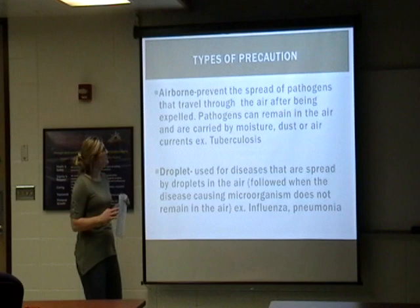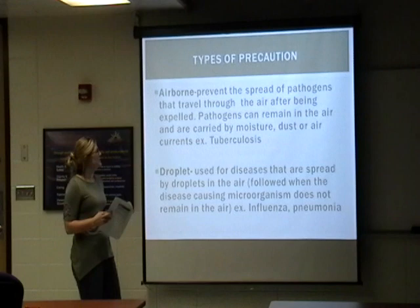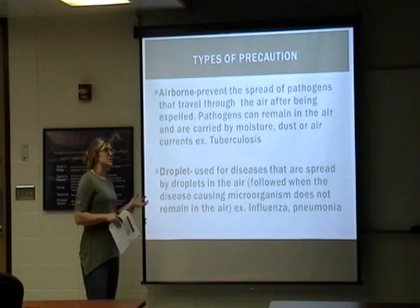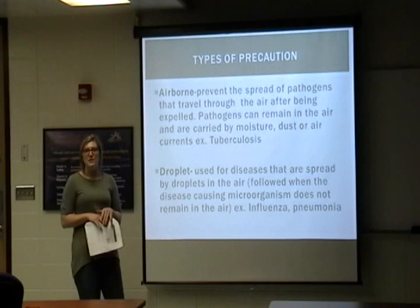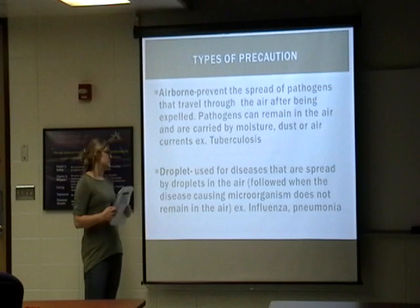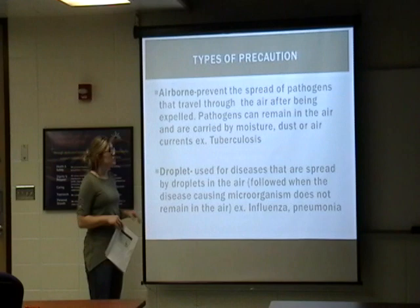The next type of precaution is airborne, which prevents the spread of pathogens that travel through the air after being expelled. Pathogens can remain in the air and are carried by moisture, dust, or air currents. A good example is tuberculosis, for which you'll need gowns, gloves, and a special mask called an N95 respirator. The last precaution is droplet, used for diseases spread by droplets in the air that do not remain airborne. Examples include influenza and pneumonia, and you'll want to wear a gown, gloves, and a mask.